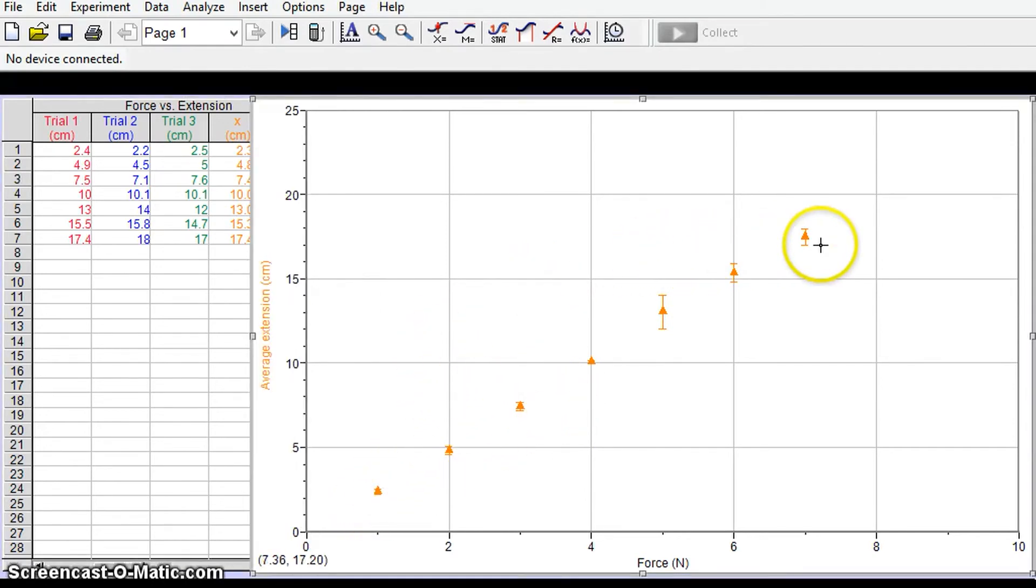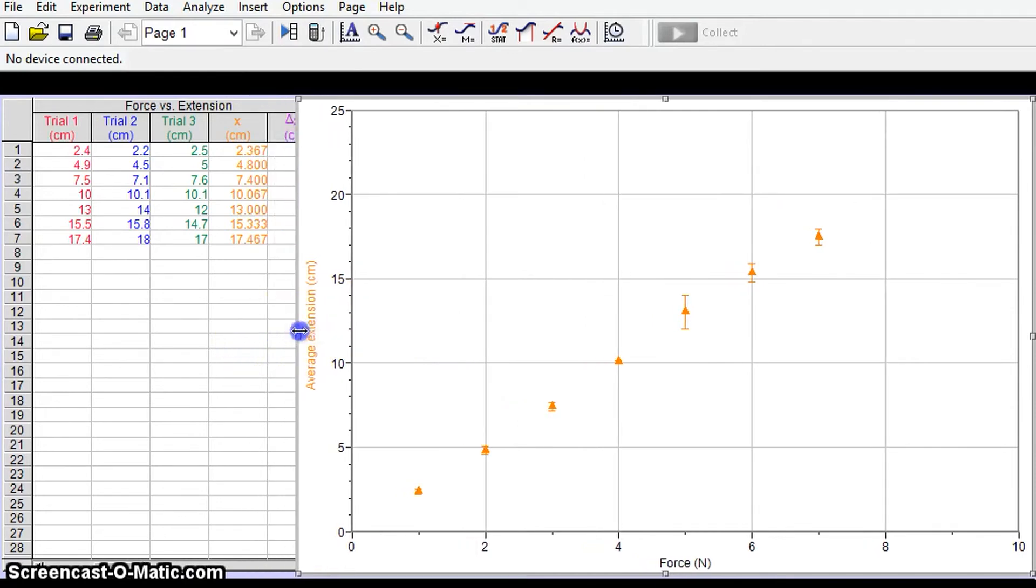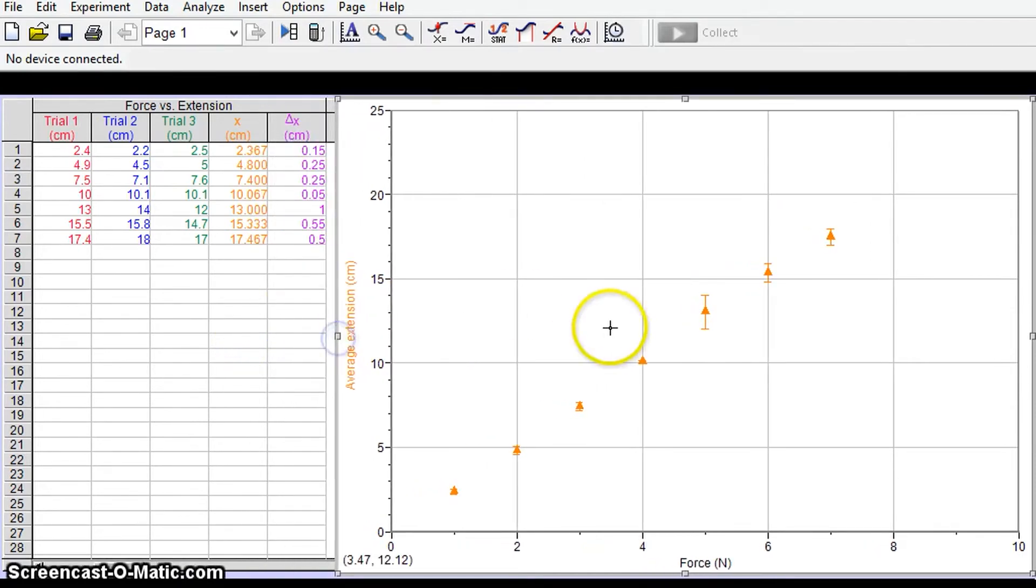We can see that we have some larger ones this one here, this corresponds to the uncertainty of plus or minus one whereas we've got a very small one next to it here plus or minus 0.05 we can barely see it. The important thing is we can see that they're all different.